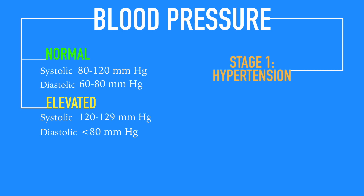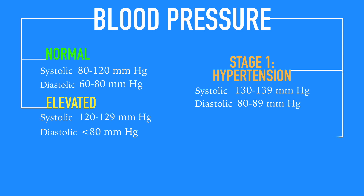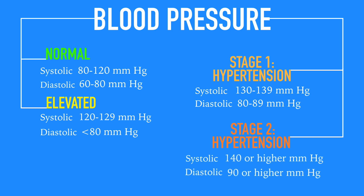Stage 1 hypertension now has readings of systolic pressure of 130 to 139 mmHg or diastolic pressure of 80 to 89 mmHg. Stage 2 hypertension now has readings of systolic pressure of 140 or higher mmHg or diastolic of 90 or higher mmHg.